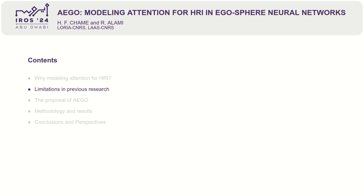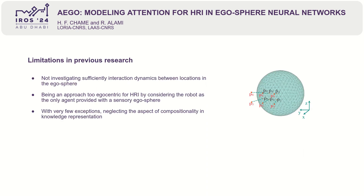Main limitations of previous works are: first, not investigating sufficiently interaction dynamics between locations in the egosphere — for instance, how the activation at one location of the egosphere could excite or inhibit neighbor locations. Second, being an approach too egocentric for HRI by considering the robot as the only agent provided with a sensory egosphere. And third, with very few exceptions,